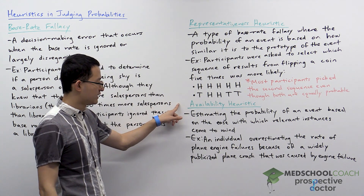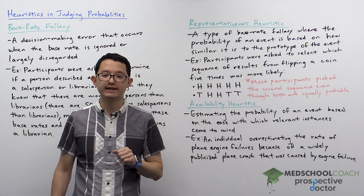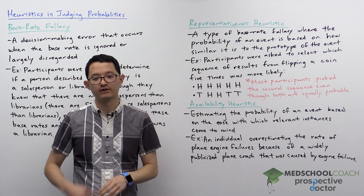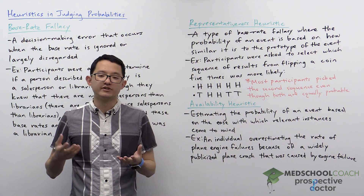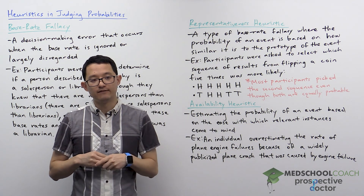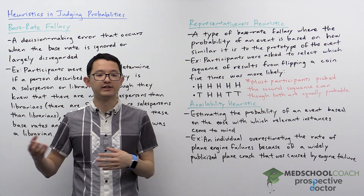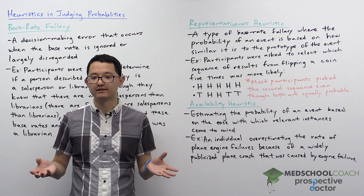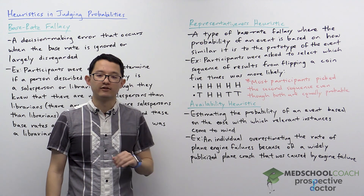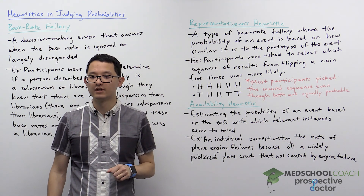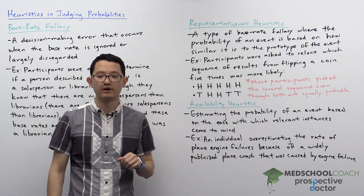Finally, we have the availability heuristic. This is estimating the probability of an event based on the ease with which relevant instances come to mind. As an example, participants were asked to estimate the rate of engine failures on planes. If individuals were aware that recently there was a plane crash due to engine failure that was widely publicized on the news, the individual was more likely to overestimate the rate of plane engine failures — not because they knew the actual answer, but just because it was very easy for them to come up with a relevant instance in mind.